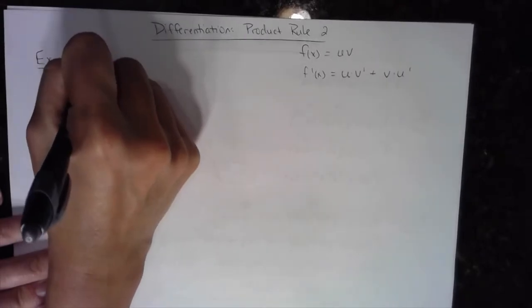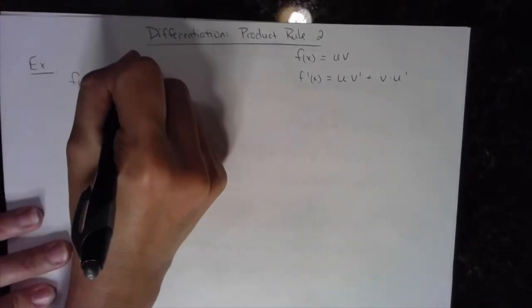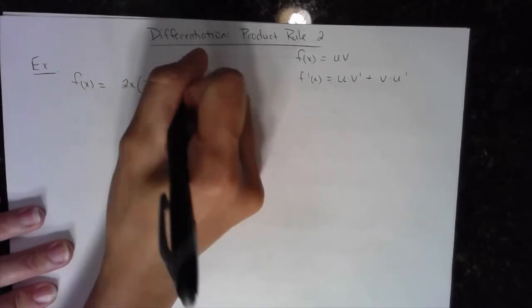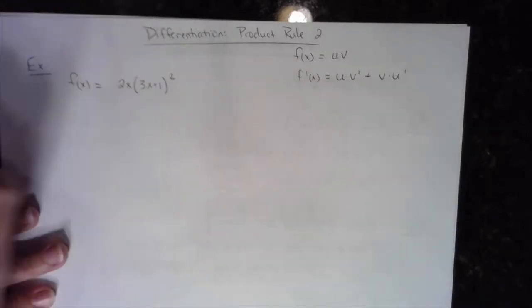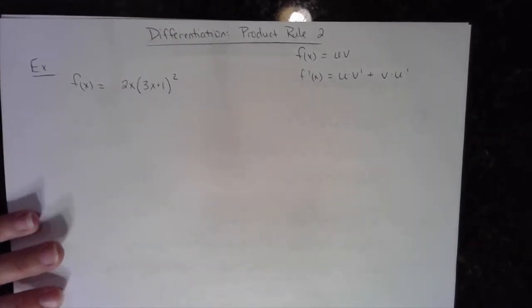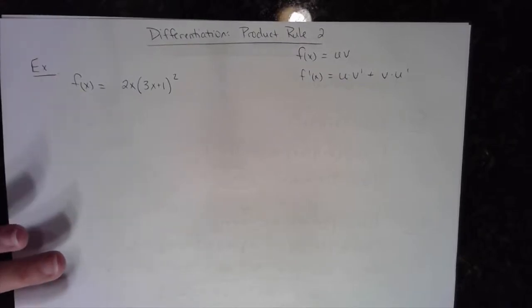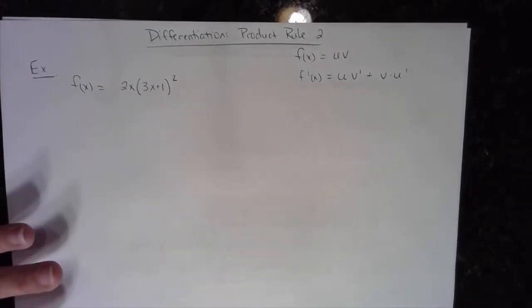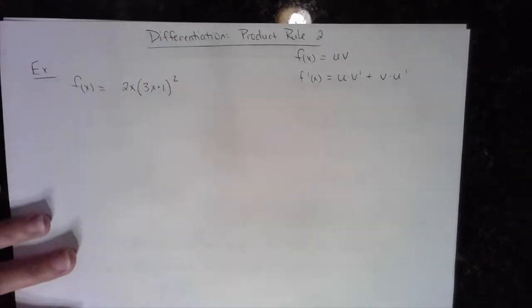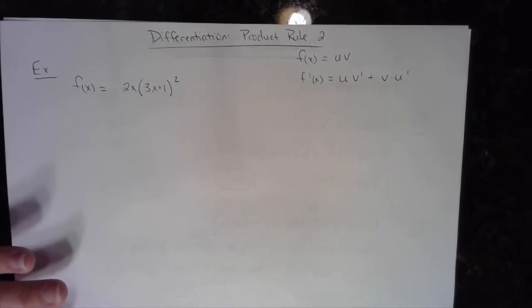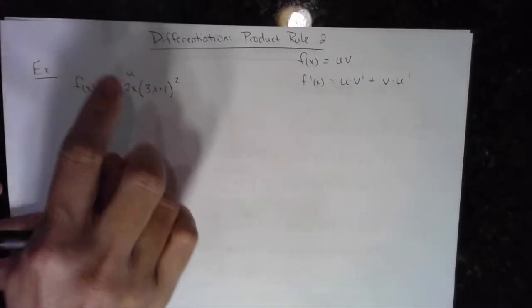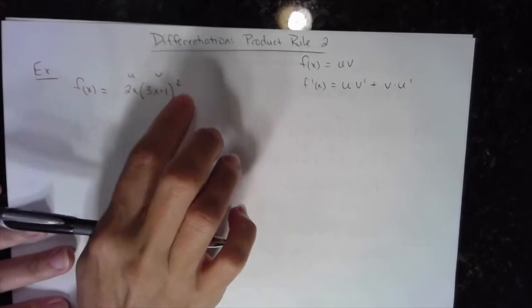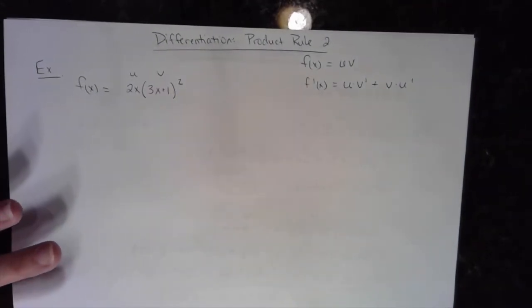So let's let our function f(x) be equal to 2x times the quantity (3x + 1) squared. I want to take the first derivative of this. I could get away without using the product rule by multiplying it out, but if this exponent were higher than 2, you wouldn't want to do that. So u is 2x and v is the whole thing (3x + 1) squared — the product of two expressions.